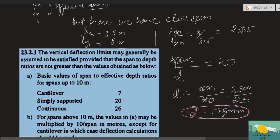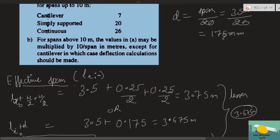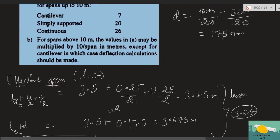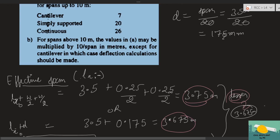Now let's find the effective span. Effective span = lx_not + w/2 + w/2, because wall width is 250 mm on each side. For simply supported slabs, effective span = clear span + w/2 + w/2. Comparing lx_not and lx_not + d — take the lesser. This gives us 3.675 m, which is less than 3.75 m.